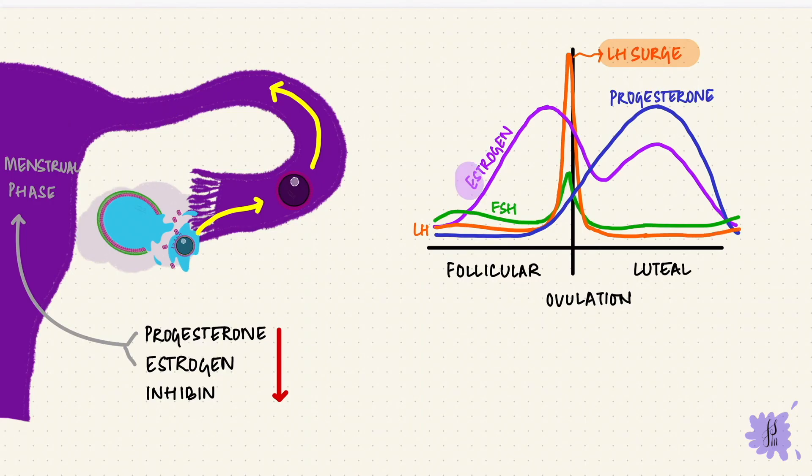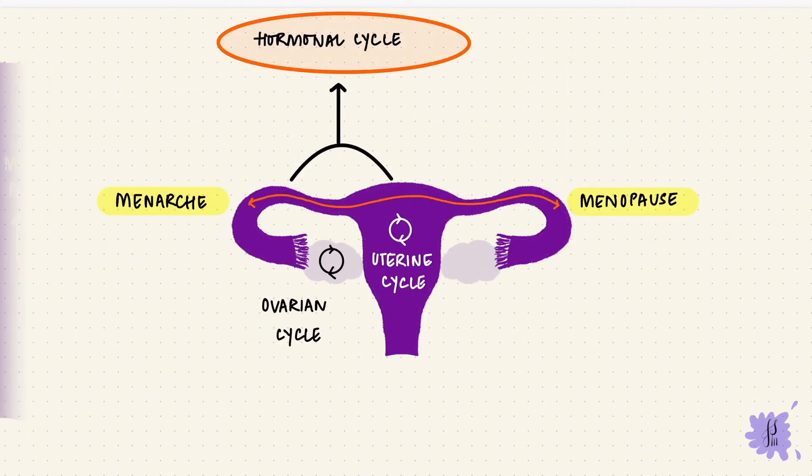And the cycle is going to repeat again. The estrogen and the progesterone formed during the cycle have effects on the endometrium of the uterus, creating the uterine or the endometrial cycle. And all of this was the ovarian cycle.